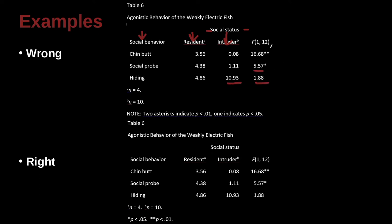We've got some asterisks here, which is going to be our probability note, right? So here we can begin to see the example has a problem. Here is the word note, but actually what we've done here is a little bit strange. Two asterisks indicate P less than 0.01. One indicates P less than 0.05.